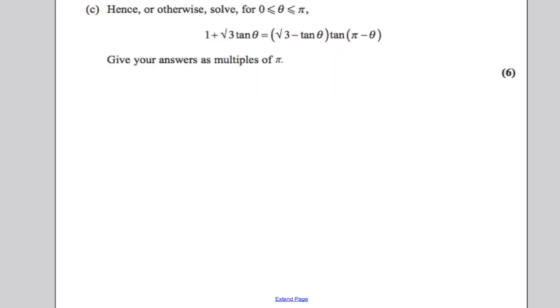Now the last part is where students struggled. Hence or otherwise, solve the following. We want to solve it between 0 and pi. We want to give our answers as multiples of pi. The key word here is hence. How on earth does that look anything like what we've been doing? If we go back, does this have anything to do with what we've previously been doing? Well, I'll tell you right now, that one doesn't. What about these two? Well, look. Hold on a sec.